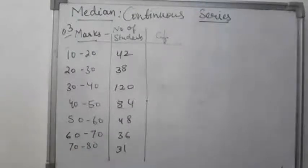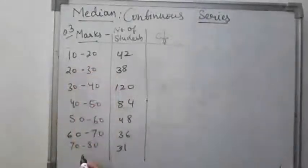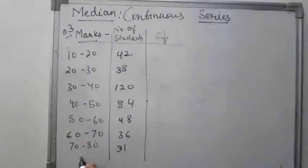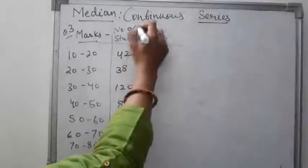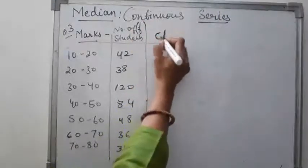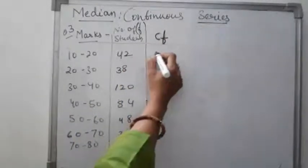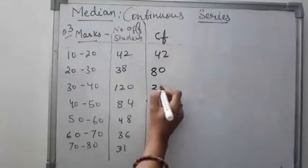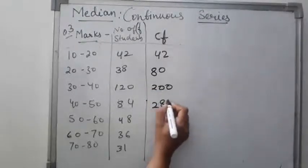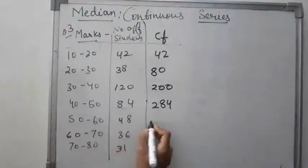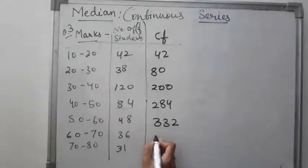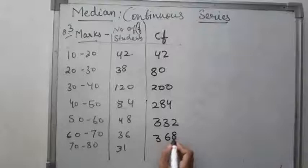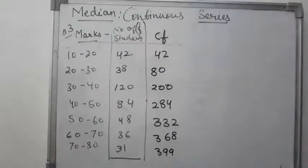Third is the continuous series. First we arrange the data in ascending or descending order and convert frequency into cumulative frequency. Adding them up: 42, 80, 200, 284, 332, 368, 399. So the total of frequencies is 399.